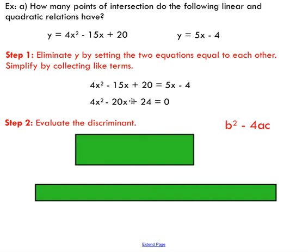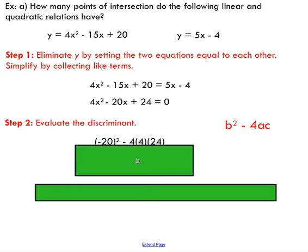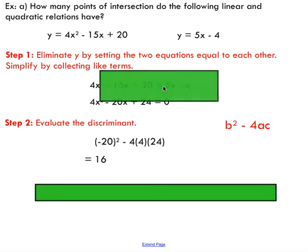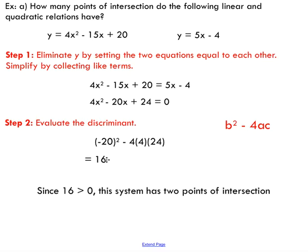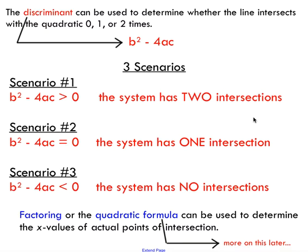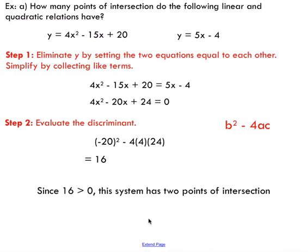This new quadratic has engulfed our linear relation. Next, we evaluate the discriminant. Here, b refers to the coefficient in front of x, a is the coefficient in front of x², and c is the constant. Substituting all those values in, we get 16. That doesn't mean 16 points of intersection — since it's positive, we have two points of intersection.